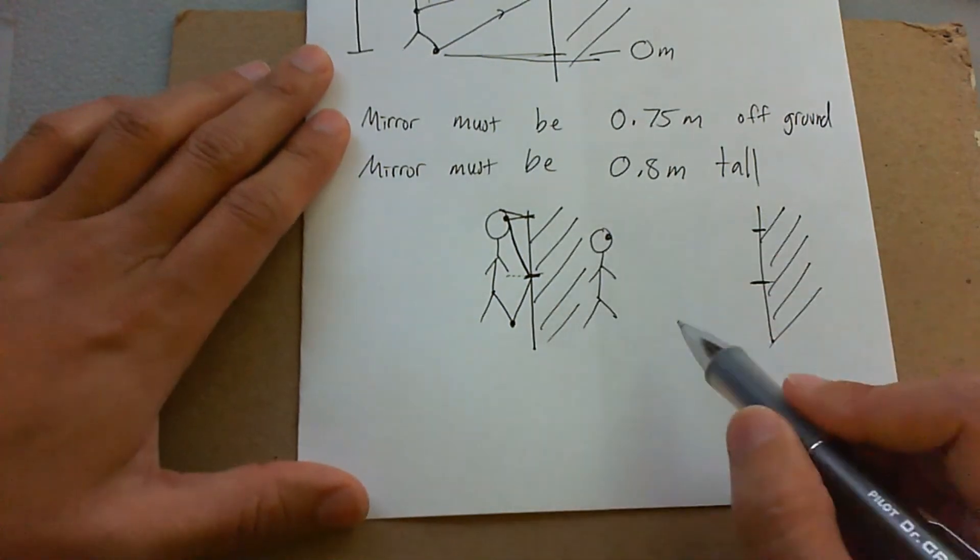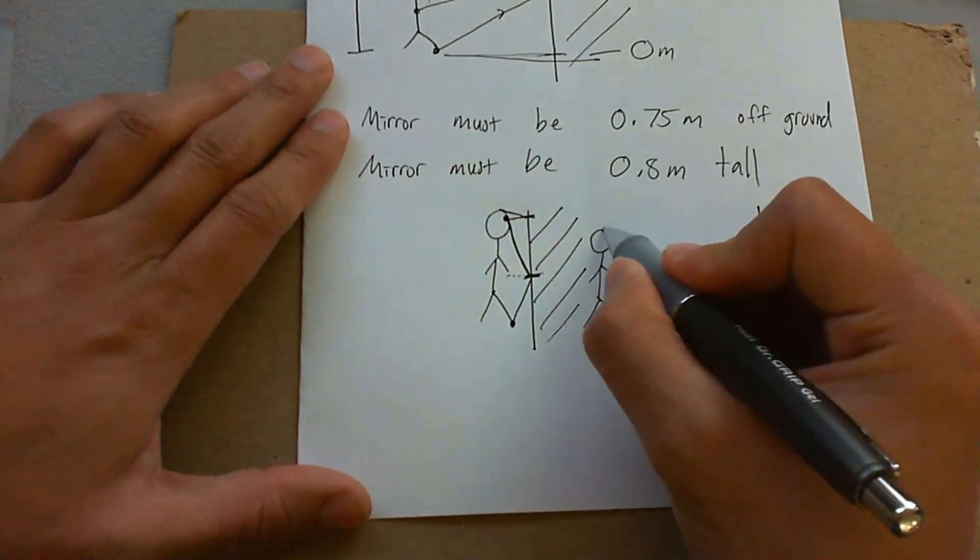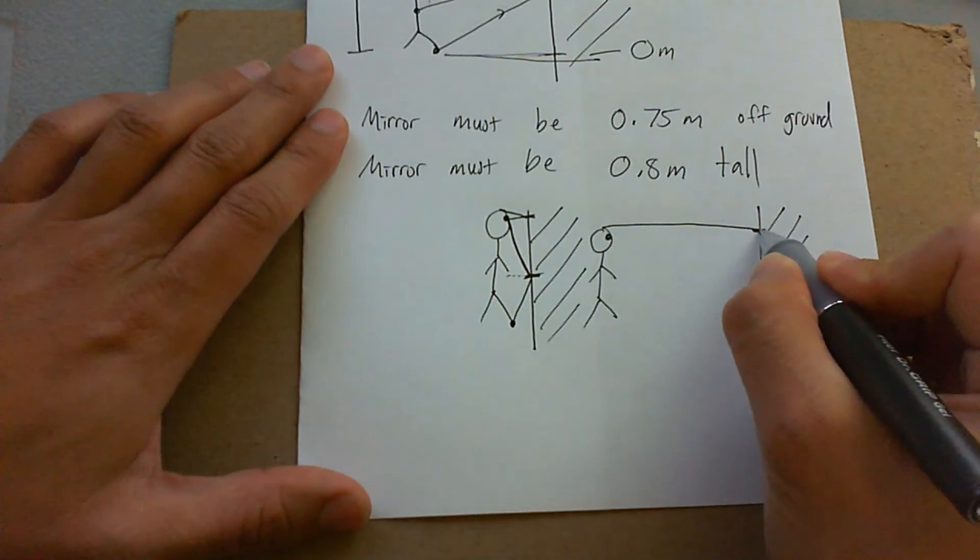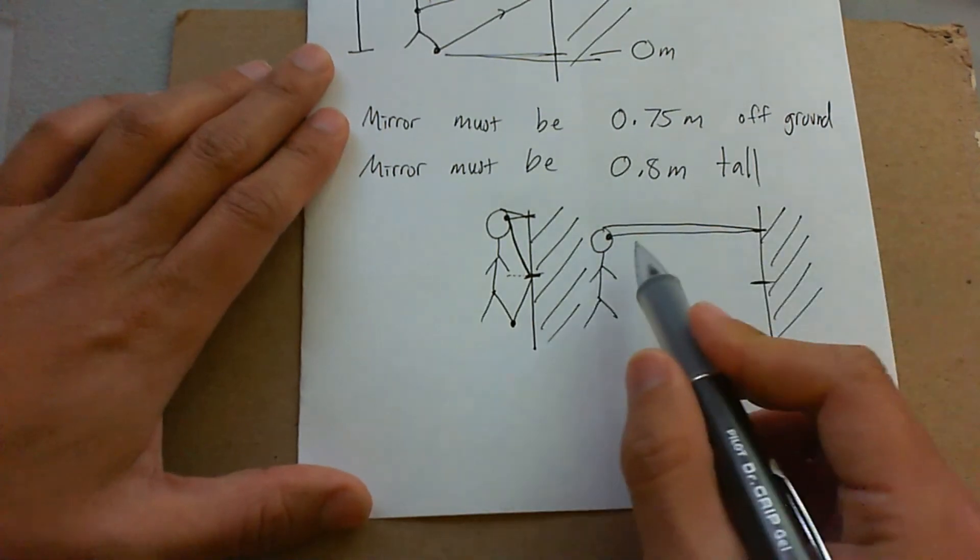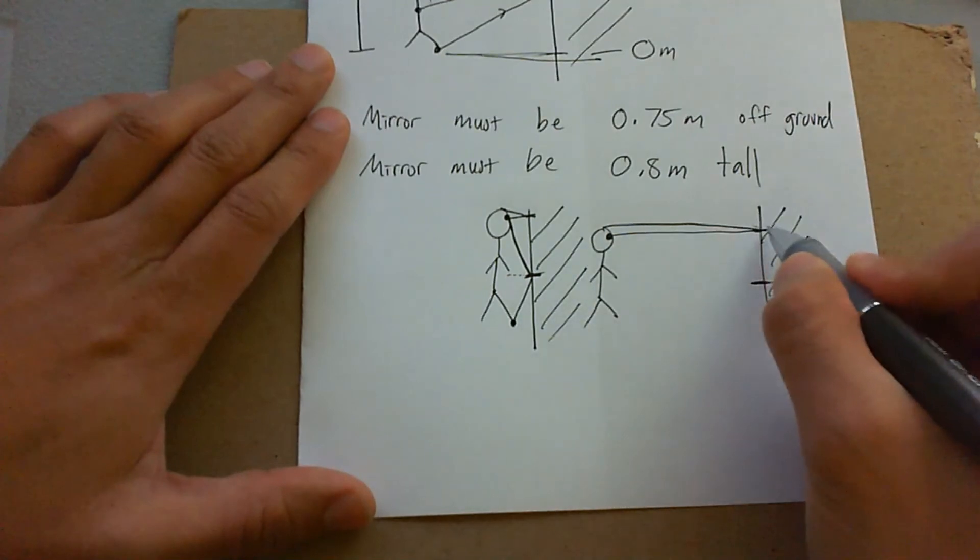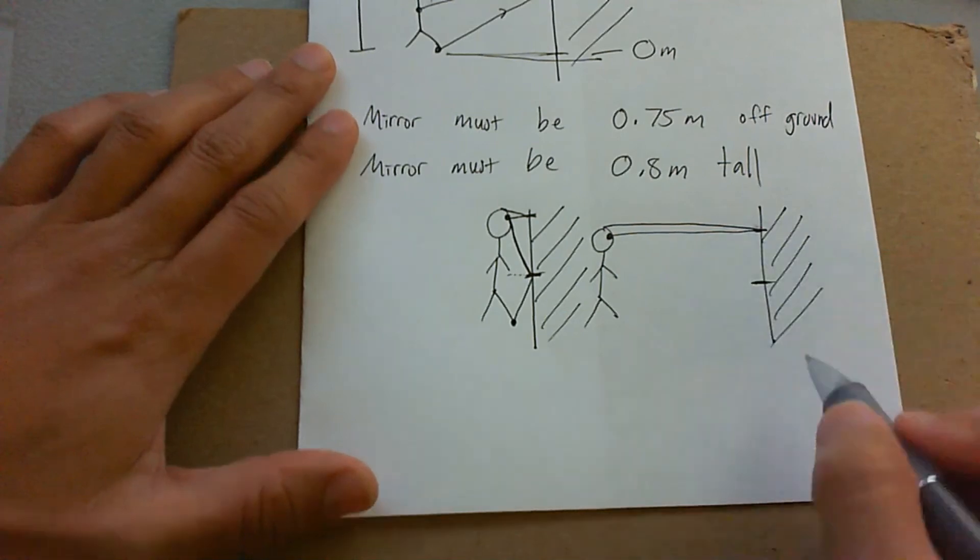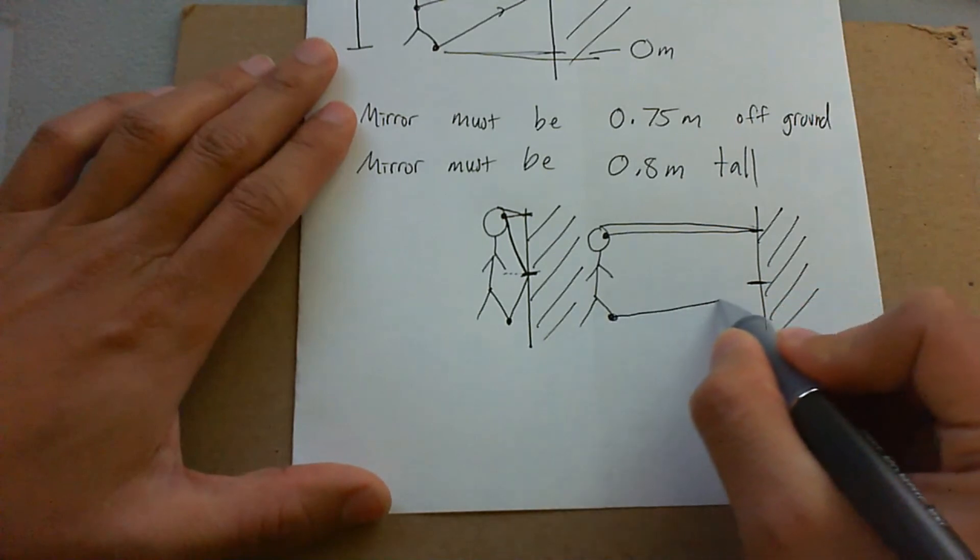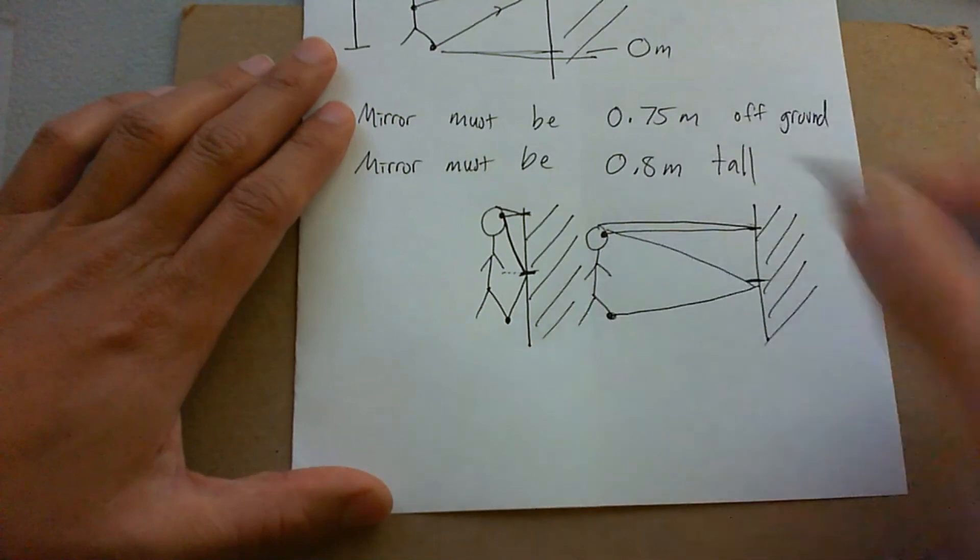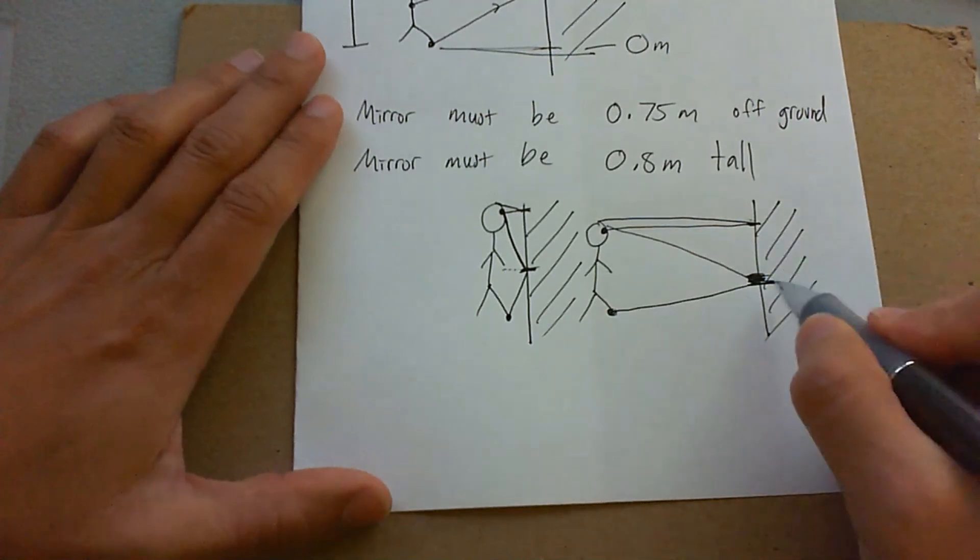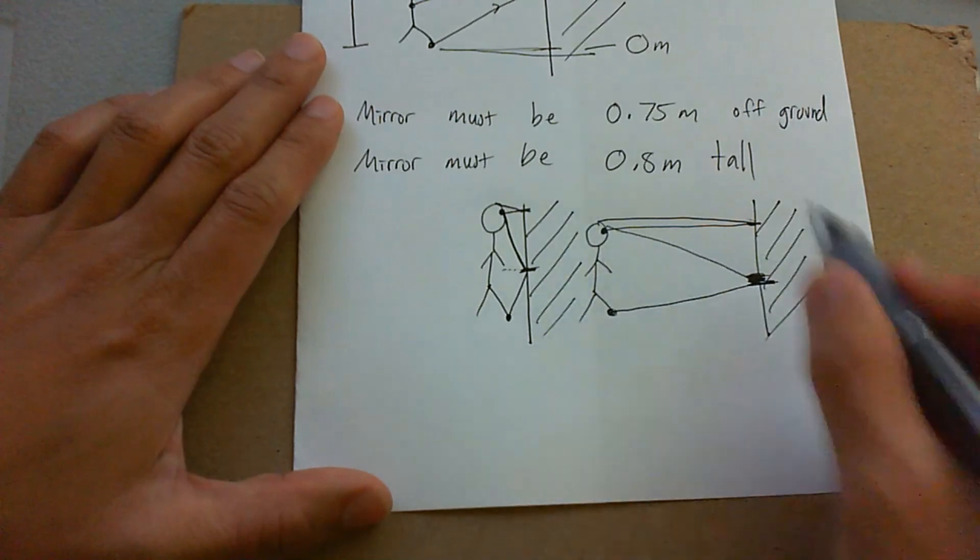If you're far away, it's the same thing. A very small angle of incidence and a very small angle of reflection still holds true to where you could see your head with a mirror that's slightly below your forehead or the top of your head. What about your feet? Same thing. You got a pretty small angle of incidence and a pretty small angle of reflection. That mirror can still be half your body length and see your whole body, no matter what distance you are.